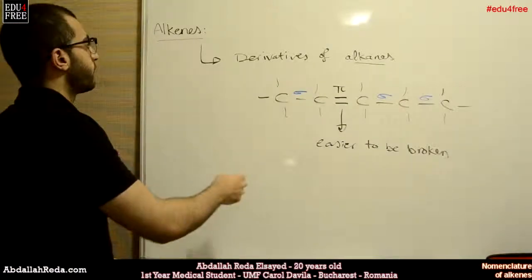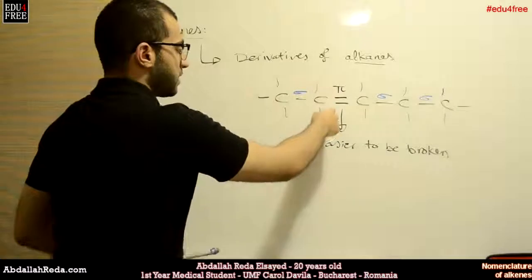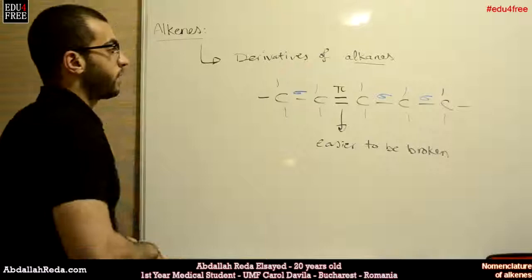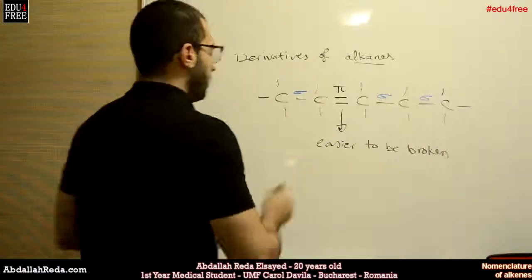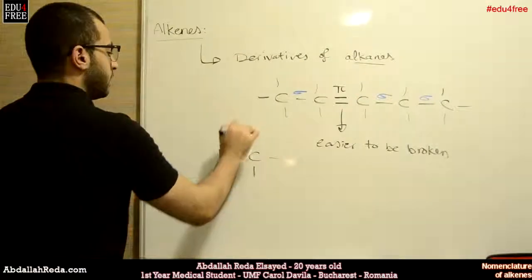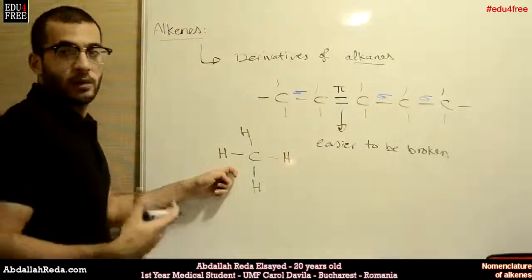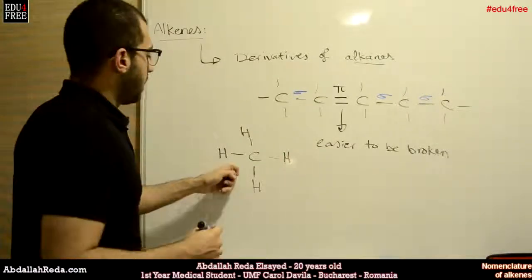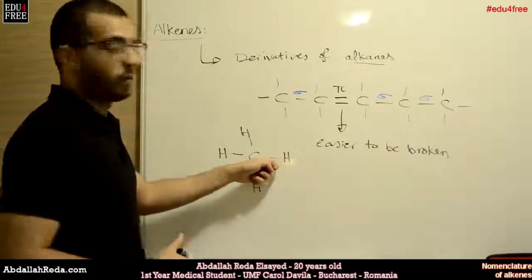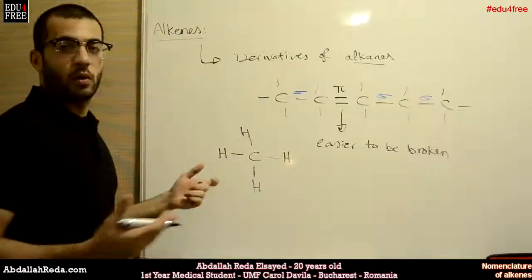So this is the main difference between alkanes and alkenes. Because of this, we don't have a methene. In methane, we have a carbon atom bound to four hydrogen atoms. But a carbon atom cannot form a double bond with a hydrogen atom because it has a valence of one, so the bond must be single. This is why we don't have an alkene with just one carbon atom.